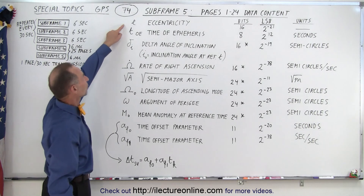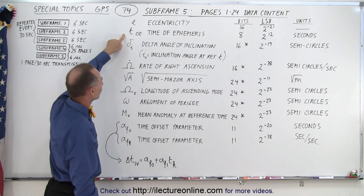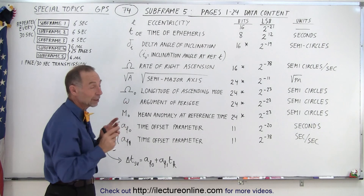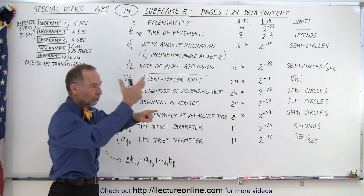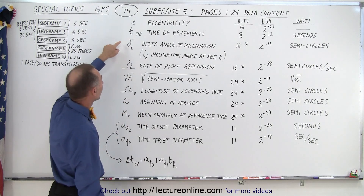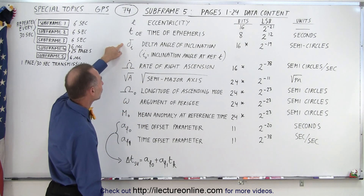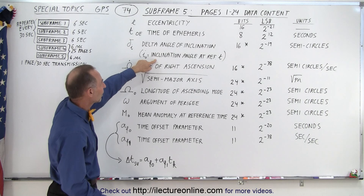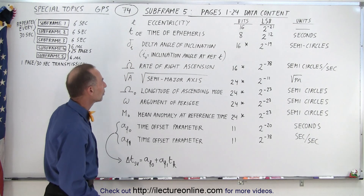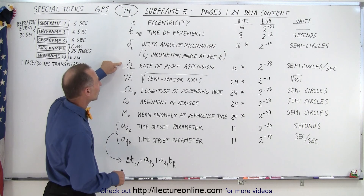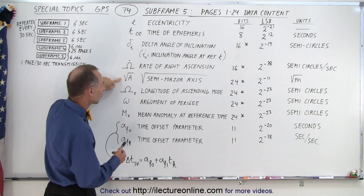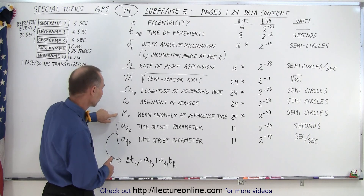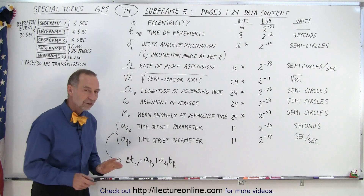So let's go through the list. We have the eccentricity of the orbit, the time of ephemeris — to make sure we know what the current ephemeris data time is associated with, so when we compare this to when we download the ephemeris data we'll make sure the time matches. We also have what we call the delta angle of inclination, which is different from what we find in the ephemeris data where they give you the inclination angle at the reference time. We also have the rate of right ascension, the square root of the semi-major axis, the longitude of ascending node, the argument of perigee, and the mean anomaly at reference time.